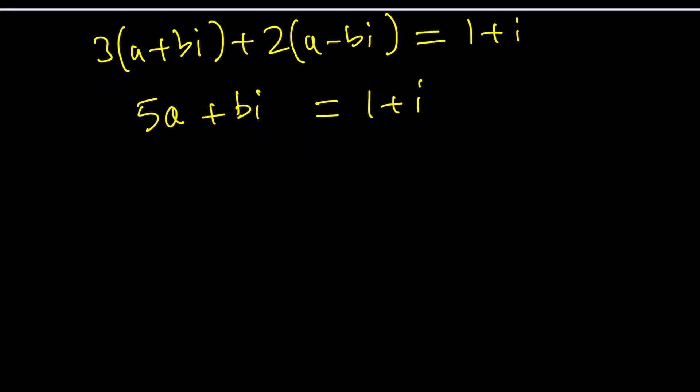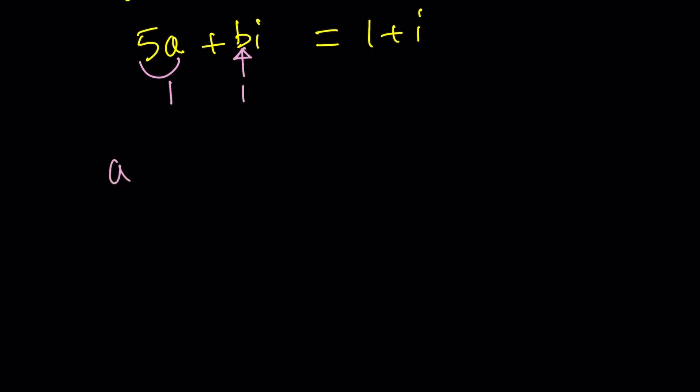This is equal to 1 + i. If two complex numbers are equal, then the real parts are equal and the imaginary parts are equal. So 5a is equal to 1 and b is equal to 1. From here, we get a = 1/5 and b = 1, which indicates that z is equal to 1/5 + i.